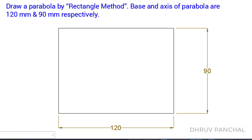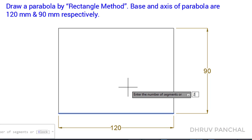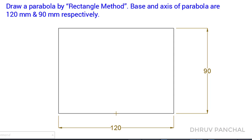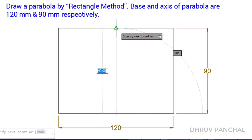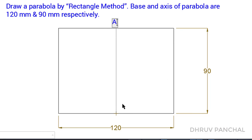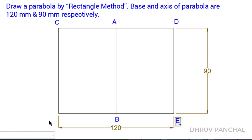After that, we will divide the base line into two equal parts. From the midpoint of the base line, draw a perpendicular line of 90 mm and name the end points of that line as point A and point B. After that, name the corner points of the rectangle as point C, point D, point E, and point F.